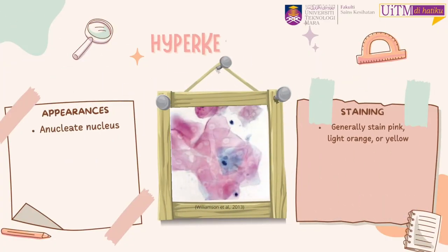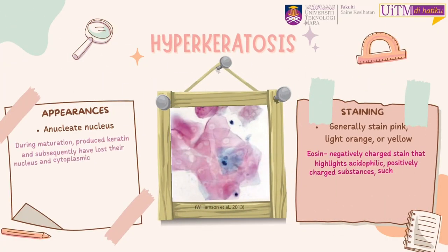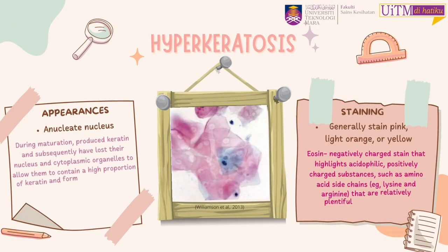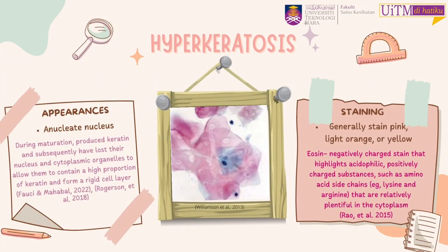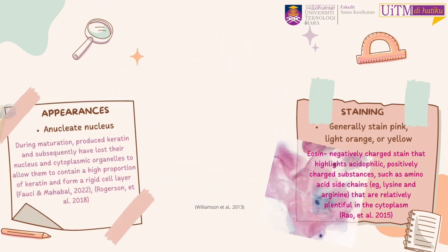Hyperkeratosis is anucleated. This is because during maturation, cells remove all their organelles, including the nucleus, allowing them to contain a high proportion of keratin and form a rigid layer that is essential for the formation of the epidermal water barrier.